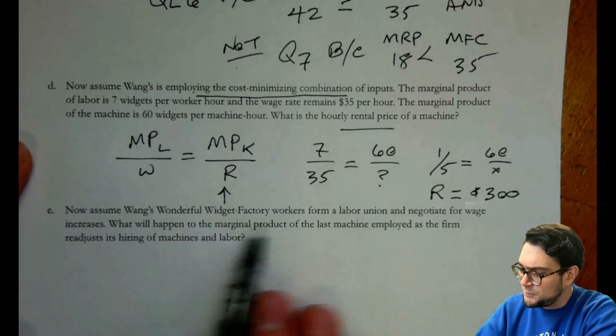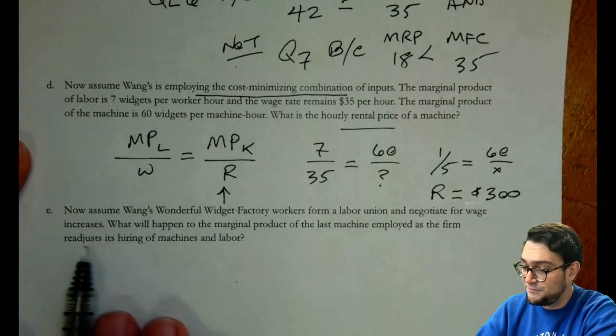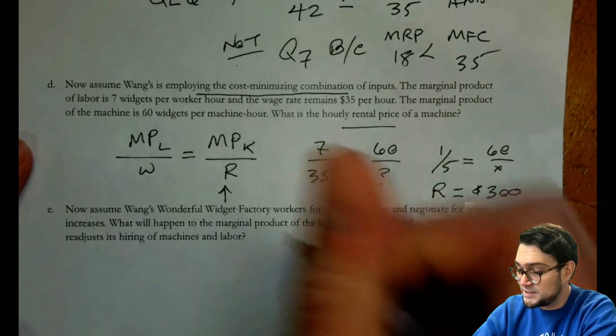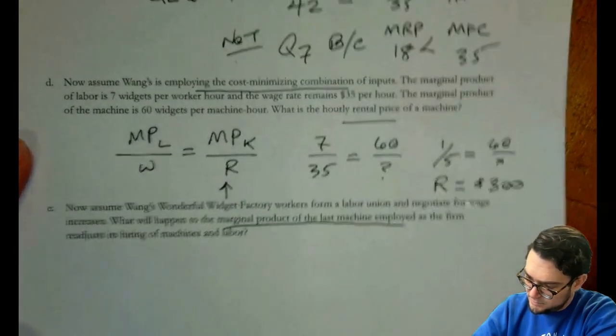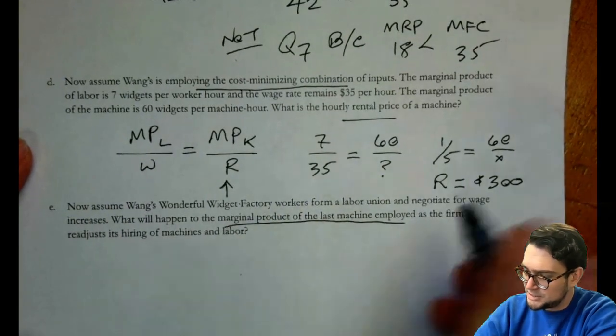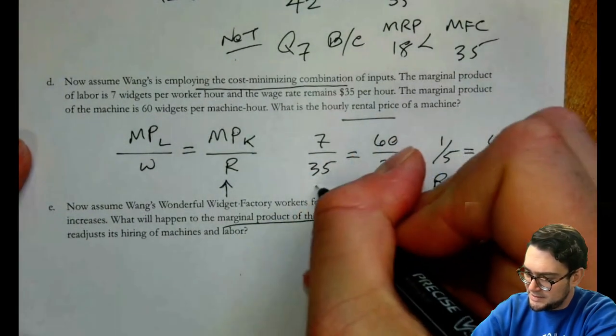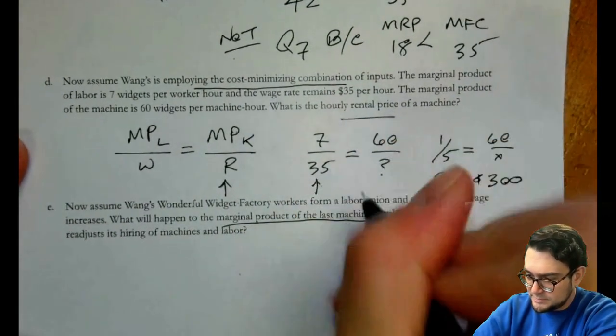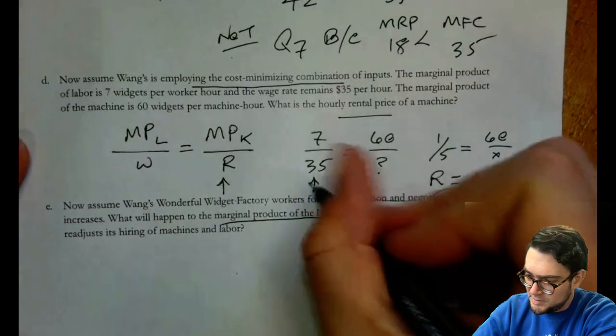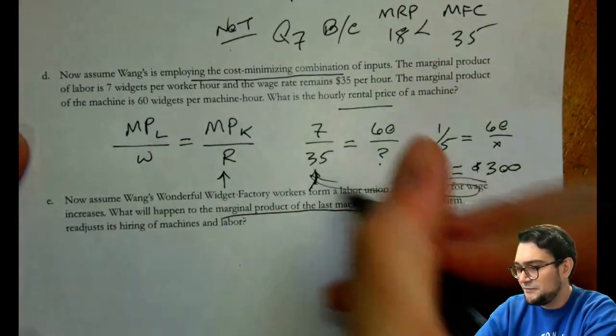Then we've got, now assume Wang's Wonderful Widget Factory workers form a labor union and negotiate for wage increases. What will happen to the marginal product of the last machine employed as they readjust? So what they're saying is that this value, the wage, is going to increase.